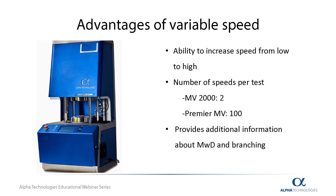In rubber manufacturing, material processability is a key factor that compounders and process engineers must pay close attention to. Processability will determine how easily the material can flow and be used in a manufacturing process such as mixing or molding. Like the standard Mooney, the multi-speed Mooney viscometer measures the Mooney viscosity which directly correlates to processability of a material.